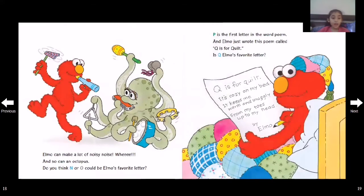Elmo can make a lot of noisy noise! Wee! And so can an octopus. Do you think N or O could be Elmo's favorite letter? P is the first letter in the word poem, and Elmo just wrote his poem called "Q is for Quilt."